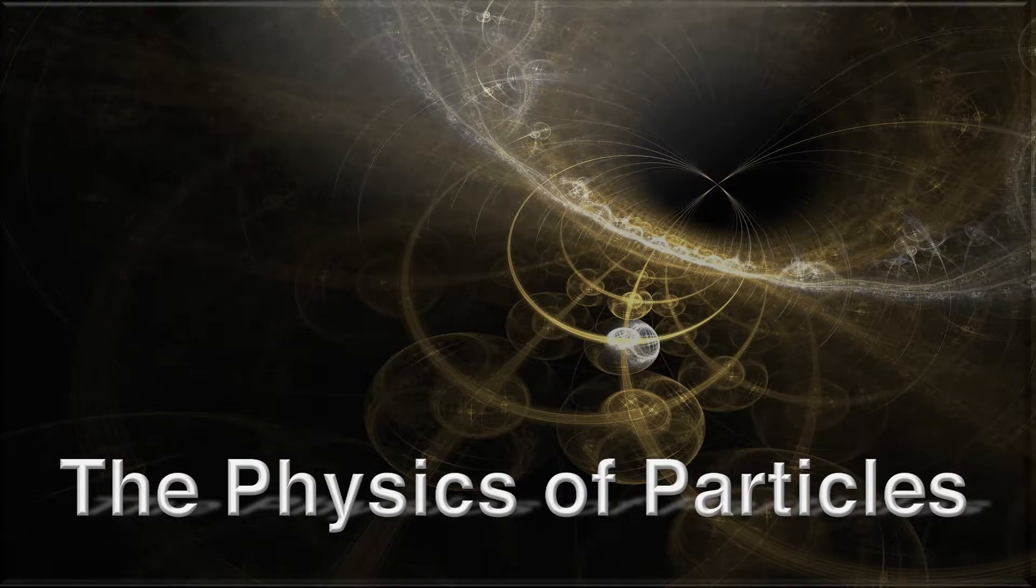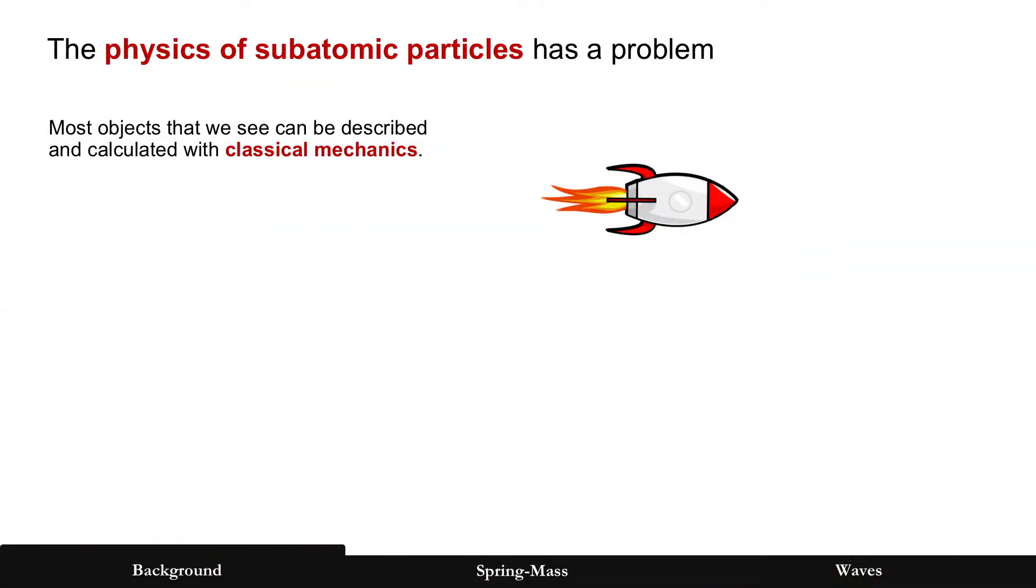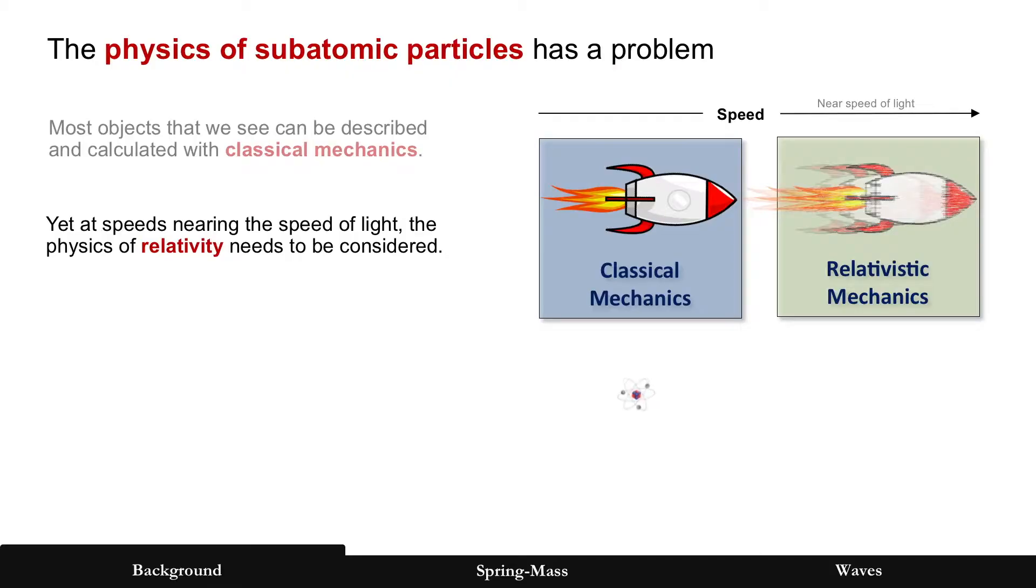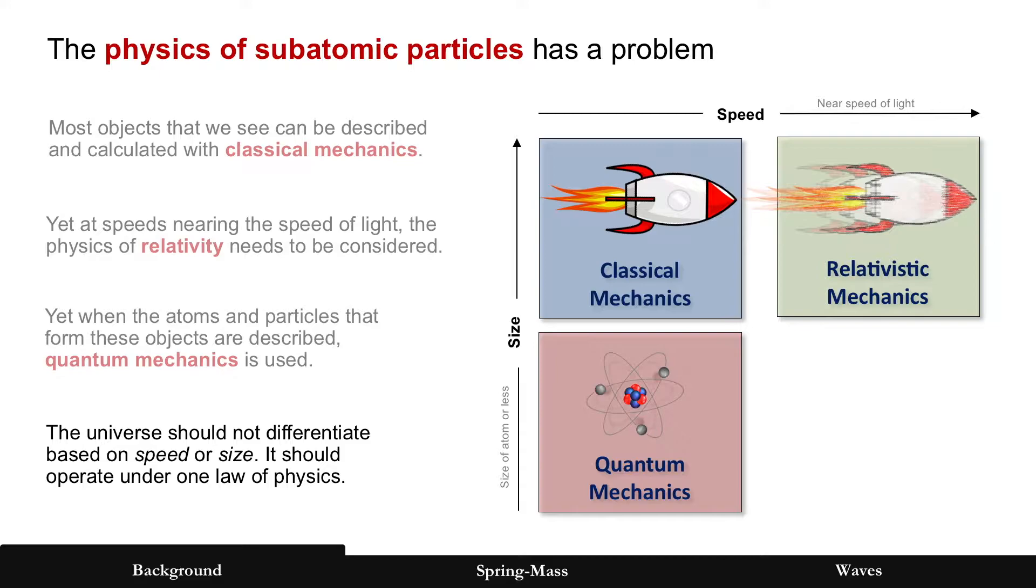The physics of particles. Let's start with the problem in physics. Most objects that we can see are calculated with classical mechanics. Take that object and accelerate it to very high speeds, closer to the speed of light, and relativity needs to be considered. Or you blow up that object, and they're made of atoms, which are made of particles that need to be described using yet another law of physics, quantum mechanics. The universe should not differentiate based on speed or size. Intuition tells us that this should really operate under one law. And there's the problem.